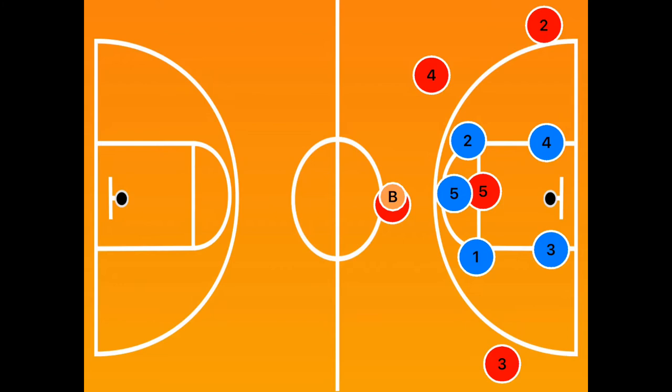It's called 32 because you have three up front and two down on the block. Our number five player, typically someone with a lot of reach and deflections, is up at the top. In 32 base, we like to go man, but it's good to change between zone and man to keep the offense uncomfortable.